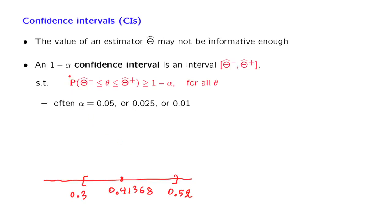Well, a 95% confidence interval, so here I'm letting alpha to be 5%. A 95% confidence interval is an interval that has the following property, that the unknown value of the parameter that we're trying to estimate falls inside this interval with probability at least 95%.